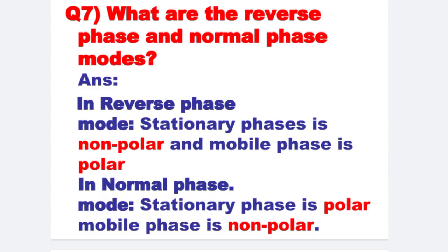Next: What are the reverse phase and normal phase modes? In reverse phase mode, the stationary phase is non-polar and the mobile phase is polar. On the other hand, in normal phase mode, the stationary phase is polar and the mobile phase is non-polar.